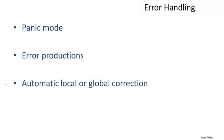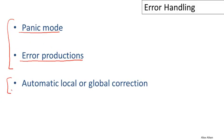I'm going to talk about three different kinds of error handling. Panic mode and error productions are the two that are used in current compilers — these are things people actually use today. Automatic local or global correction is an idea that was pursued extensively in the past, and it's historically quite interesting, particularly as a contrast to what people do today and why people tried to do it long ago.